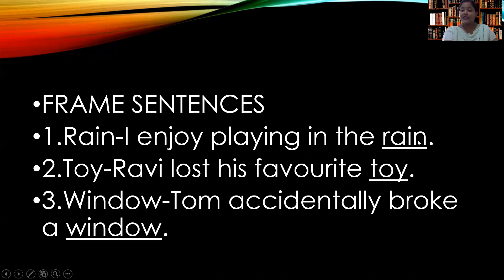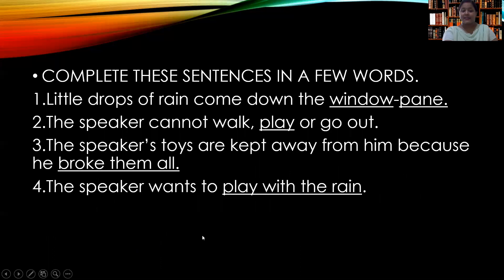Number two is 'toy.' The sentence is: 'Ravi lost his favorite toy.' You can see the word 'toy' is used and underlined. Number three is 'window.' The sentence is: 'John accidentally broke a window.' The word 'window' is used and underlined.